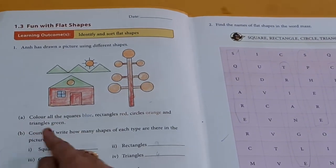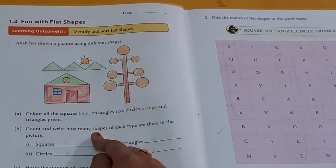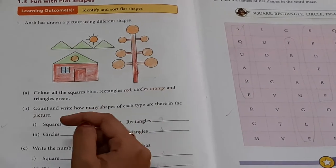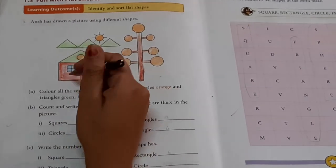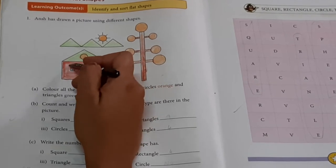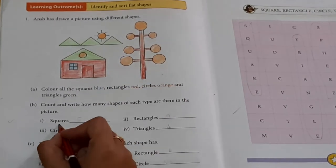B. Count and write how many shapes of each types are there in the picture. Square. Square. One, two, three, four, five. Five squares.